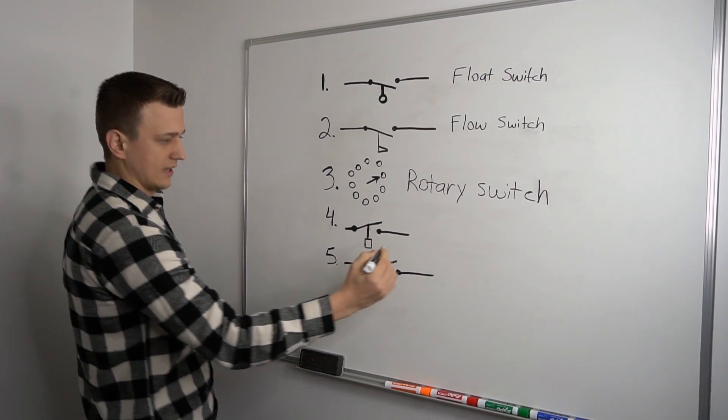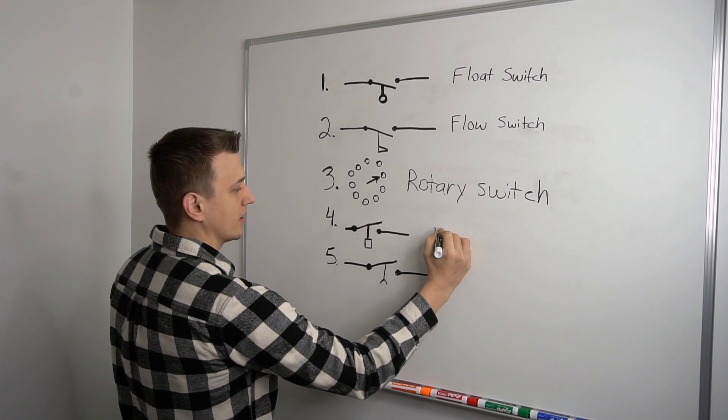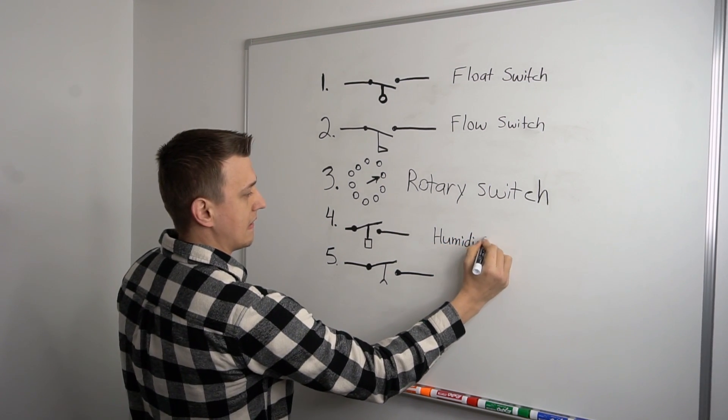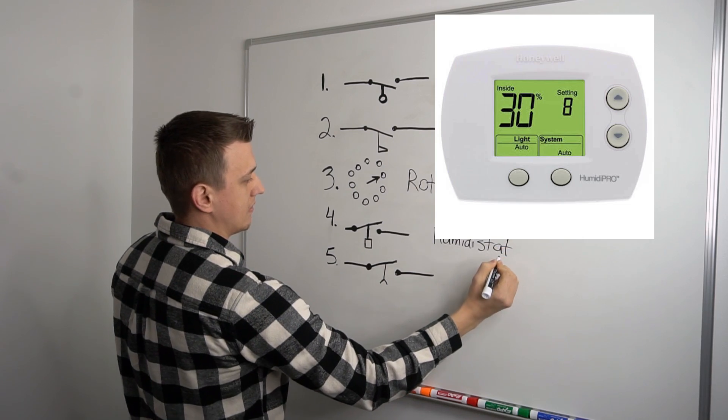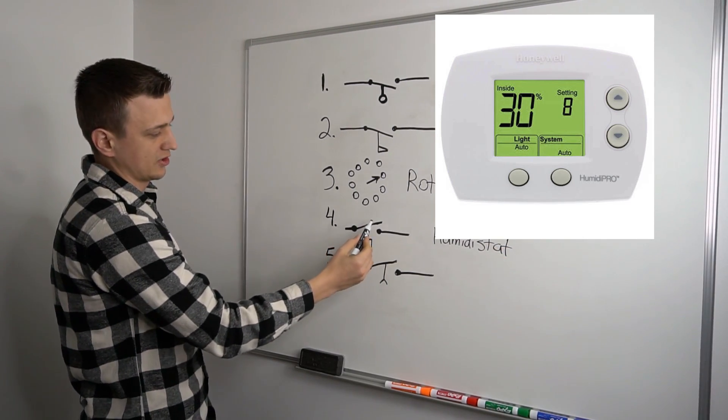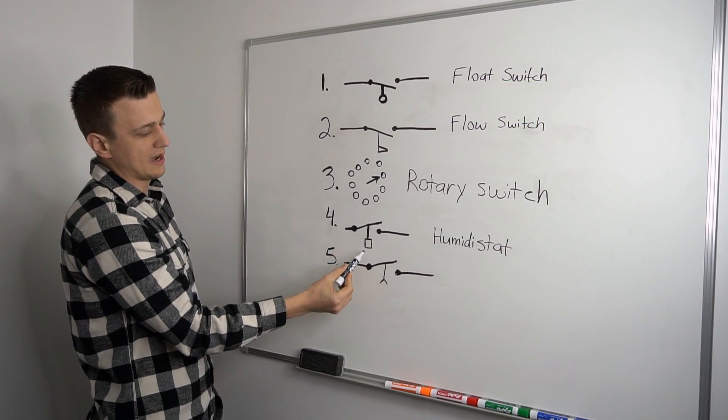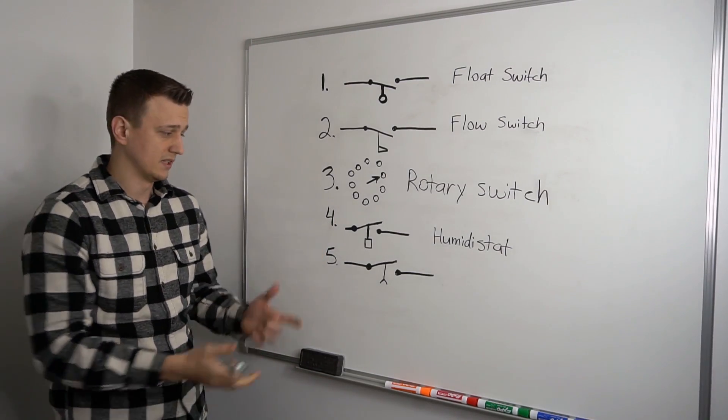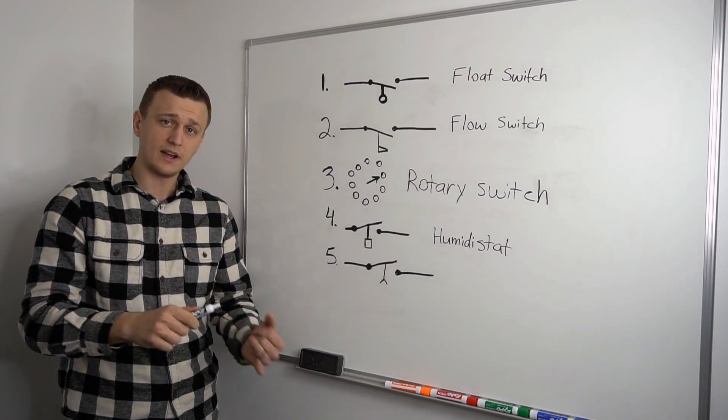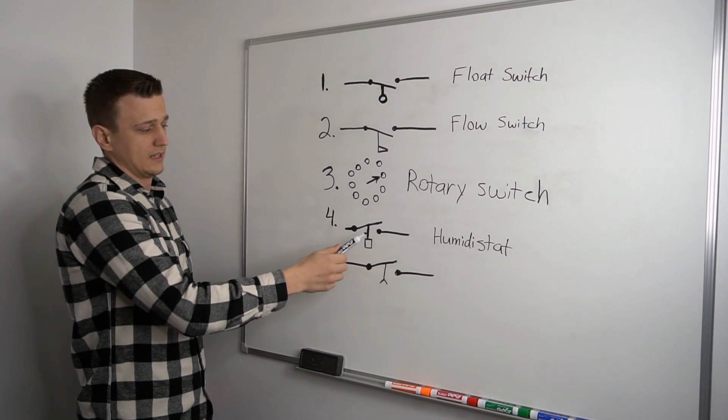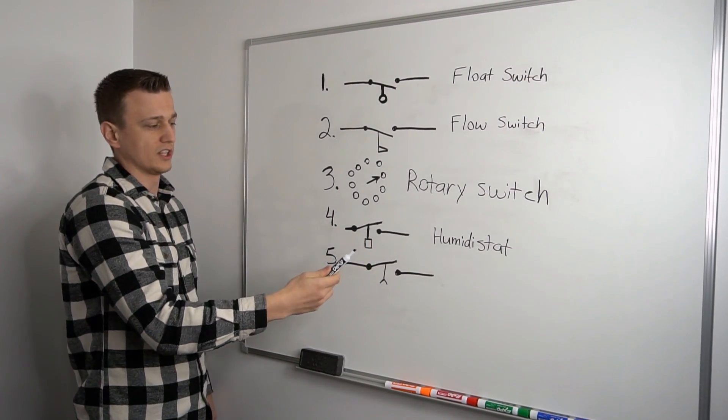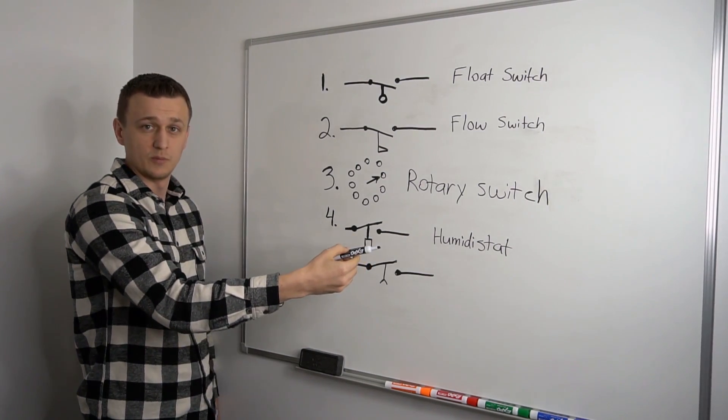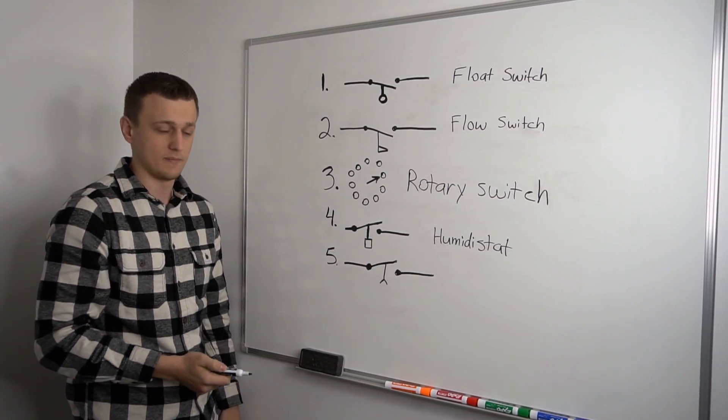This guy right here is a humidistat or a humidity control. And this symbol is basically just a normal switch with a little box under it. And of course, the application for this would be in either a dehumidifier or a humidifier. It would be in the humidistat. When the humidity level goes down, the circuit closes and turns on the humidifier to bring the humidity back up.